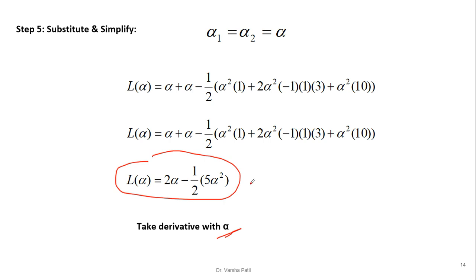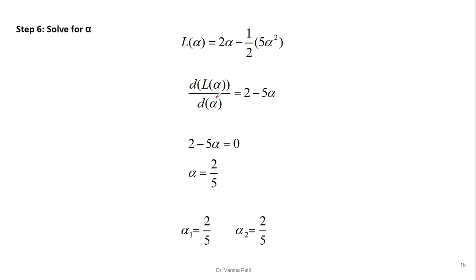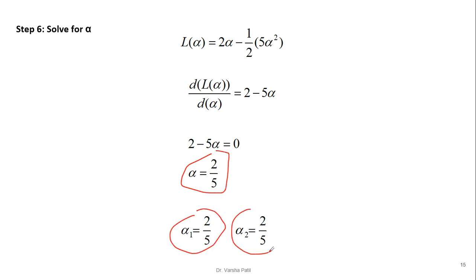After substitution, L(alpha) = 2*alpha - (1/2)*5*alpha². Taking the derivative with respect to alpha and equating to zero: 2 - 5*alpha = 0, giving alpha = 2/5. Therefore, alpha_1 = alpha_2 = 2/5.